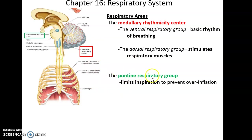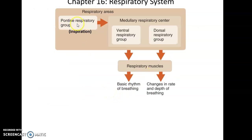In the pons, we have the pontine respiratory group. Its job is to limit inspiration to prevent over-inflation and damage to our lungs. No matter how hard you try to breathe in, you cannot breathe in so deeply that you damage your lungs. The pontine respiratory group influences the medullary respiratory center, which controls the respiratory muscles to allow rhythmic breathing and to affect the rate and depth depending on whether we're taking a nap or running a marathon.